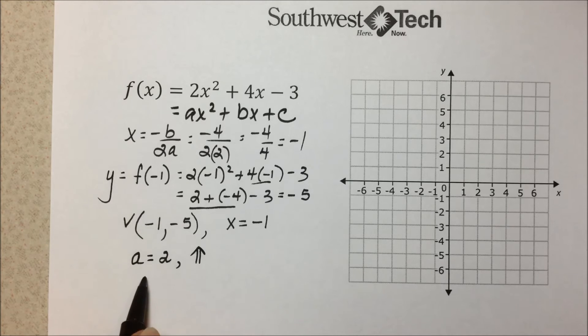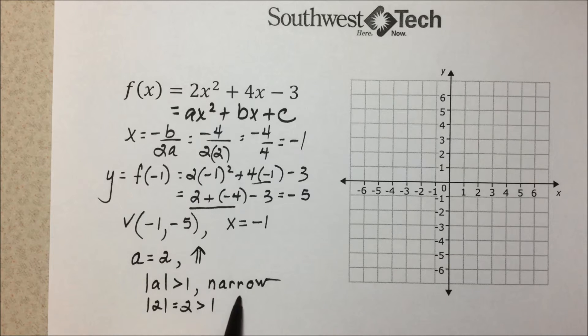since the absolute value of a greater than 1 means the parabola is narrow, and that happens to be the case, the absolute value of 2 is 2 would be greater than 1. We know that this will be narrower compared to the basic form of y = x².